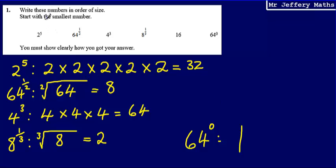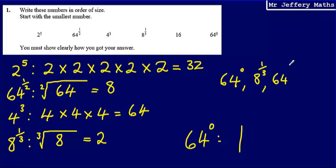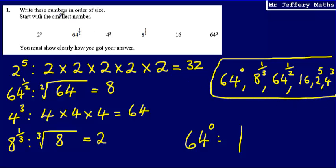We are asked to put these in order of size, starting with the smallest number. We've now got answers for all of these. So our smallest one is 64 to the power of 0, then the next smallest is 8 to the power of a third, then 64 to the power of a half, then 16, and then 2 to the power of 5 and 4 cubed. Final answer, starting with the smallest: 64 to the power of 0, 8 to the power of 1 third, 64 to the power of a half, 16, 2 to the power of 5, and then 4 cubed.